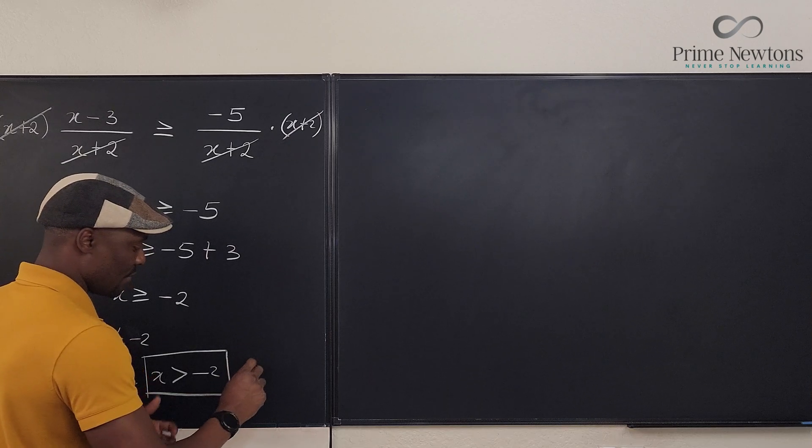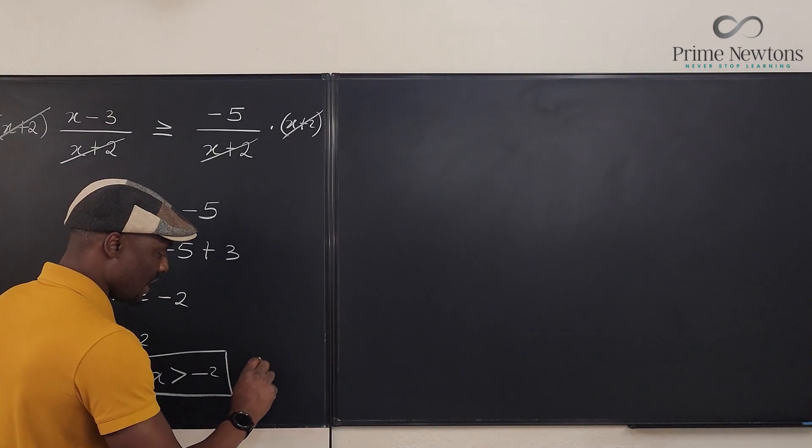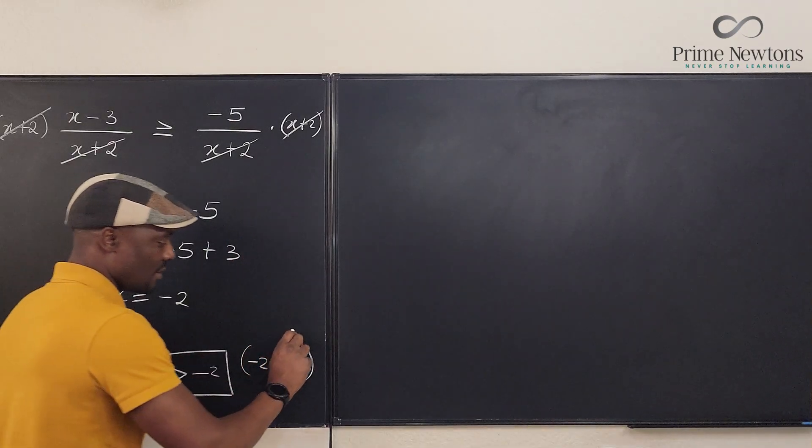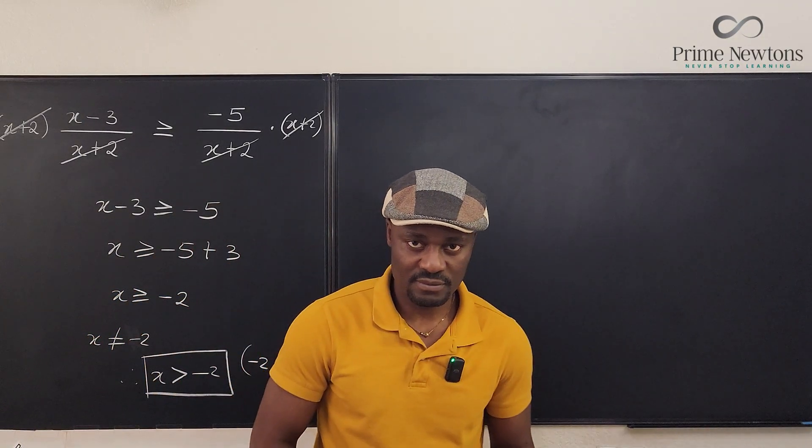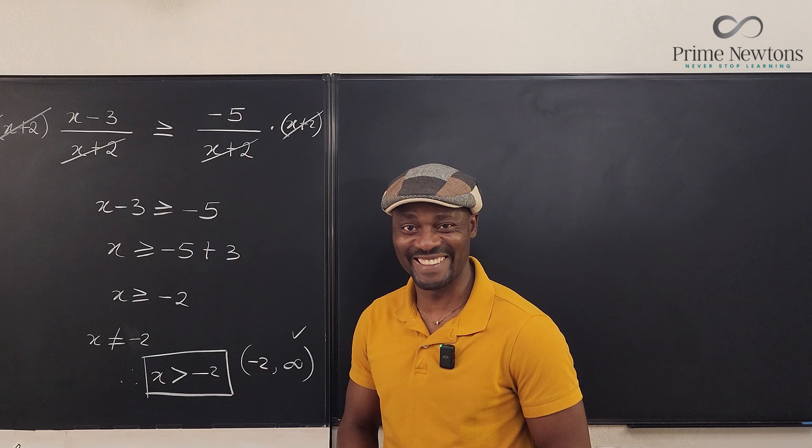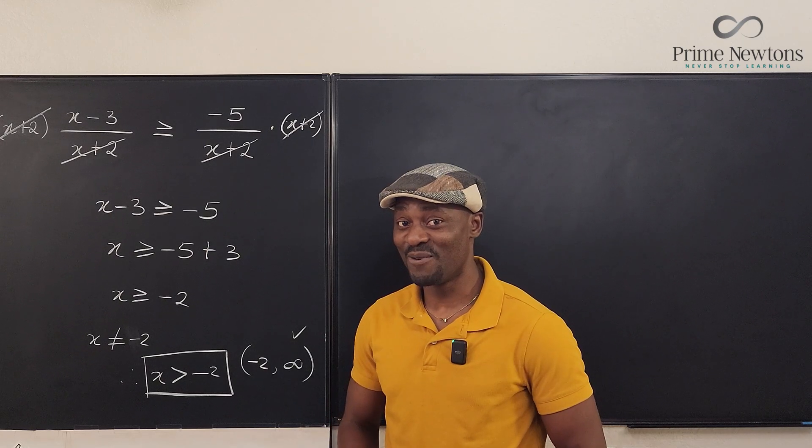So we say x is not equal to 2. Therefore, x is greater, I mean, is not equal to negative 2. So x is greater than negative 2 is the answer to this. So x is greater than negative 2. Or you can say, if we do interval notation, negative 2 to infinity is our answer. And you go celebrate. But you're wrong.